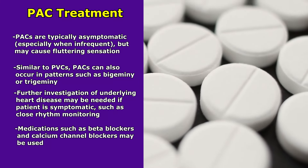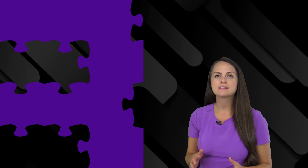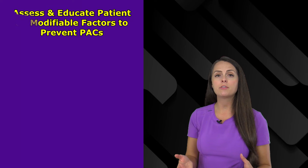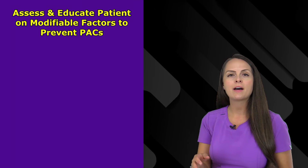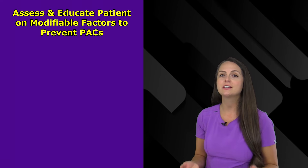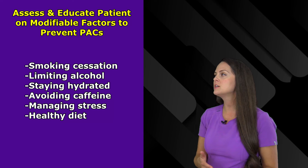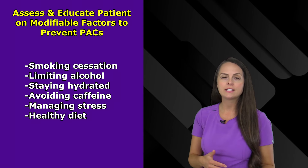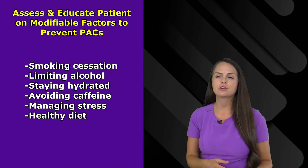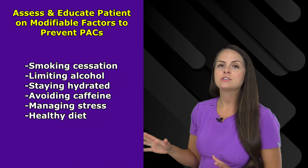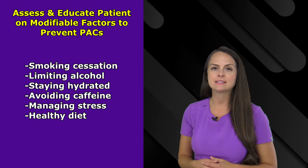Medications like beta blockers and calcium channel blockers can be used. You also want to assess and educate the patient on modifiable factors to help prevent PACs — things the patient can change. These include smoking cessation, limiting alcohol intake, staying hydrated, avoiding caffeine, managing stress, and maintaining a healthy diet to help prevent electrolyte disturbances like low potassium and magnesium.